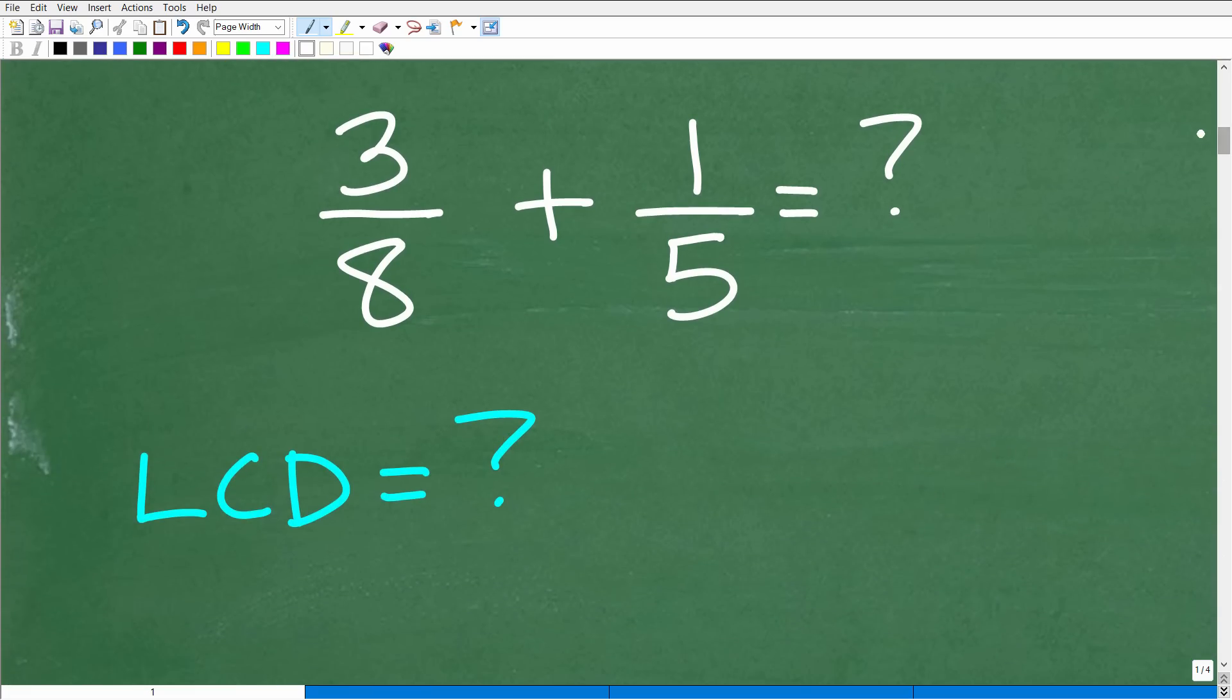Okay, so when you're adding and subtracting fractions, you can only add or subtract fractions if the denominators are the same or they are common, right? So when we have common denominators, we're talking about these bottom numbers. These are the denominators of a fraction. The top numbers are the numerators.